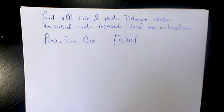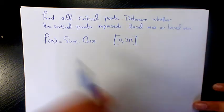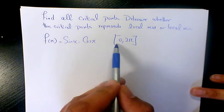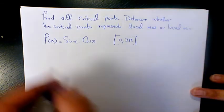What's up guys, this is Mass here. Welcome to another video. In this video I want to show you how to find critical points and determine whether you're dealing with a local minimum or local maximum. The function is f(x) = sin(x)cos(x) on the interval [0, 2π].